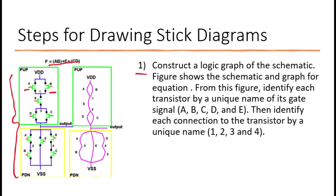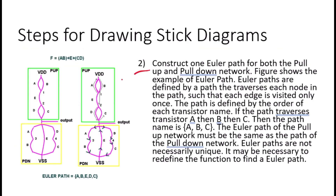In step two you need to create Euler paths for both the pull-up and pull-down networks. The Euler path is a path that traverses each transistor in a way that all connections are made once. The pull-up network is typically made from pMOS transistors and the pull-down network from nMOS transistors. In our example, an Euler path might follow the order A to B to E to D to C. You need to make sure that both the pull-up and pull-down networks follow the same Euler path in order for the layout to be consistent, ensuring symmetry and minimizing wiring complexity.